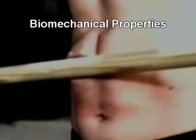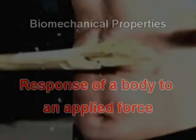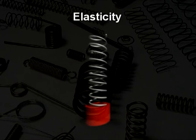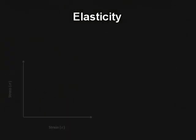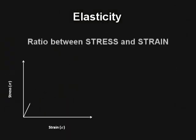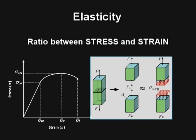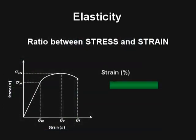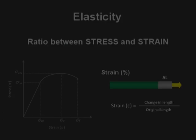Biomechanical properties are related to the response of a body to an applied force. Elasticity is the ability of a body to deform with complete reversibility, and is calculated as the ratio between stress and strain. Stress is defined as the load per cross-sectional area. Strain is the percent change in length and is dimensionless.